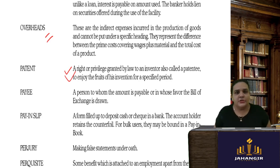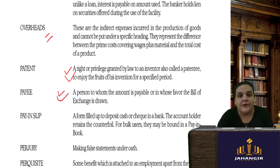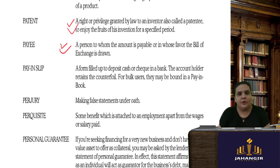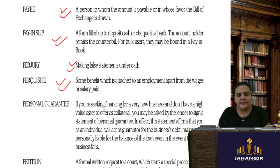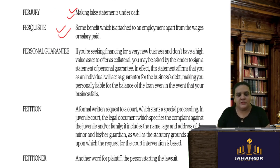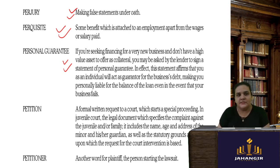A patent is when you register your invention — the inventor is known as a patentee and can register the invention so that no one else can use it. Payee is the person to whom the amount is payable or in whose favor a bill of exchange is drawn. Pay-in slip is the slip you fill when depositing a cheque or cash in the bank. Perjury is making a false statement. A perquisite is a benefit given over and above your salary in employment. Personal guarantee is required when seeking finance for a new business with insufficient assets.